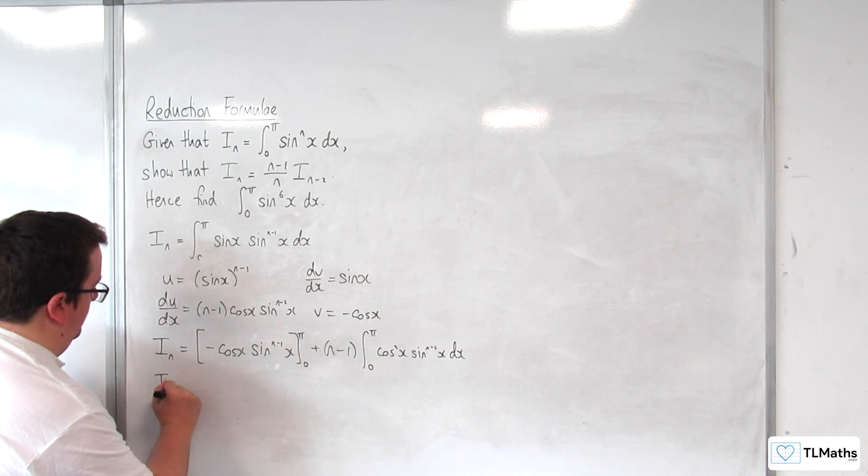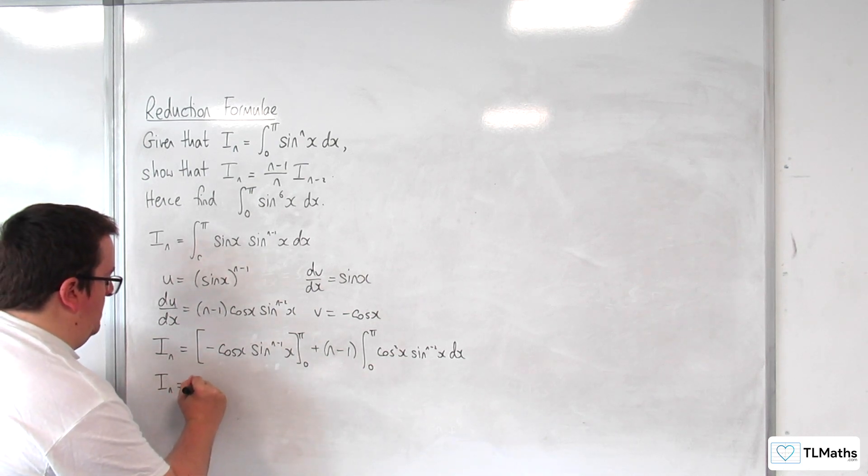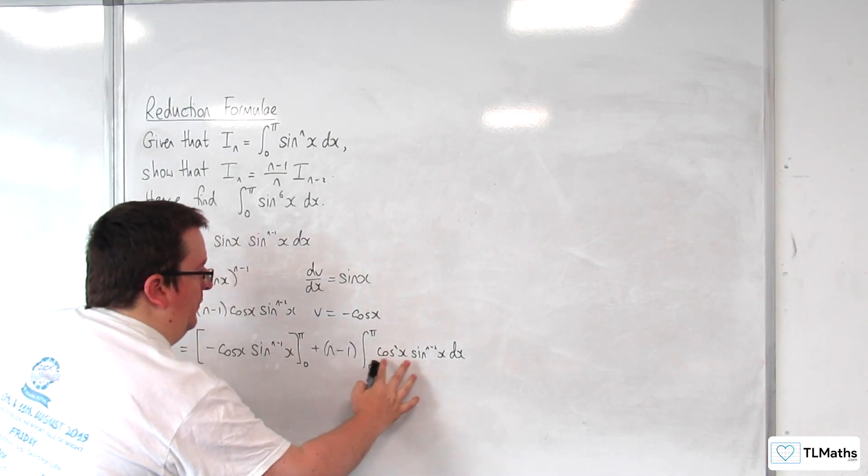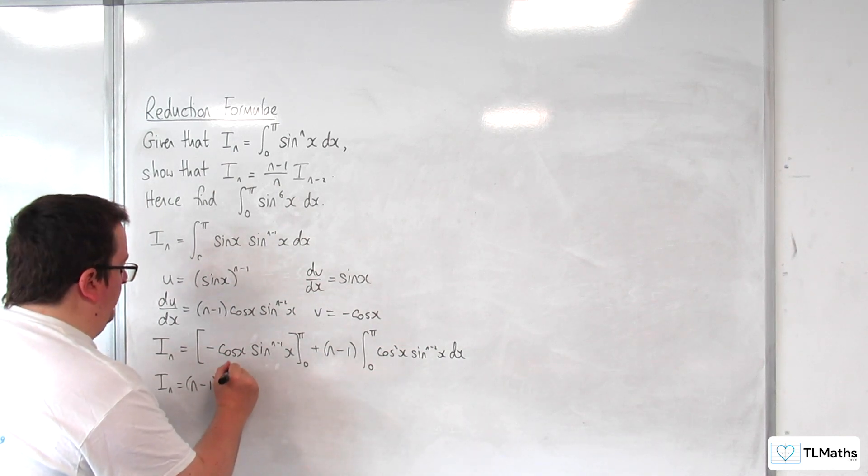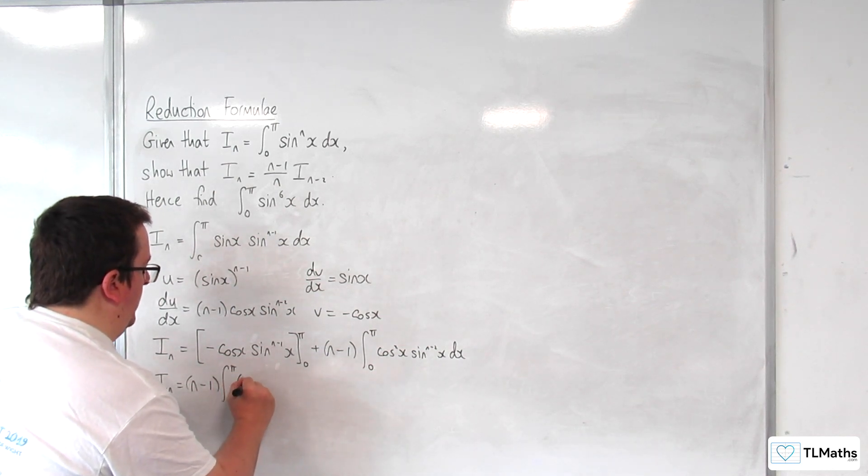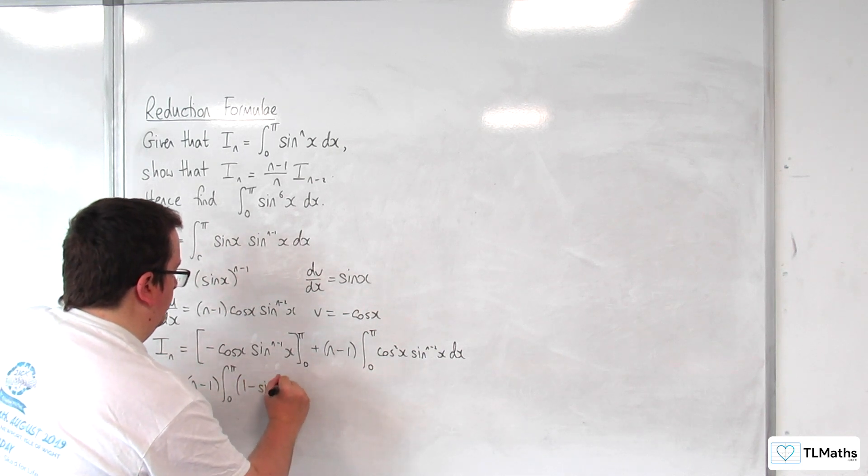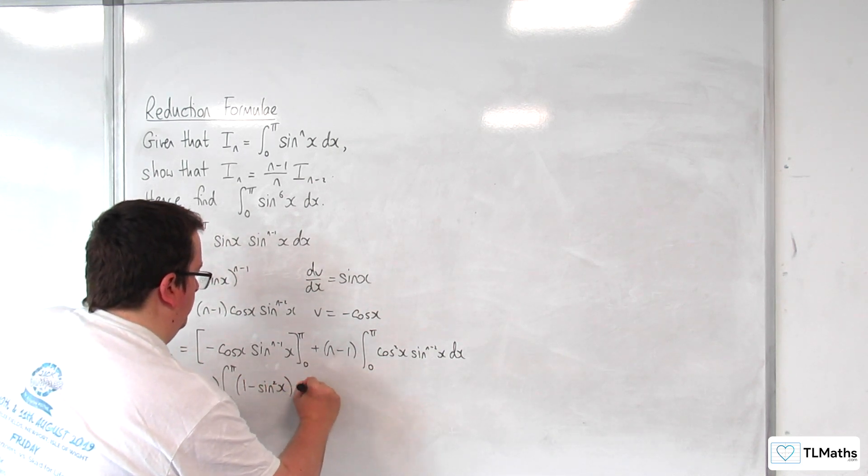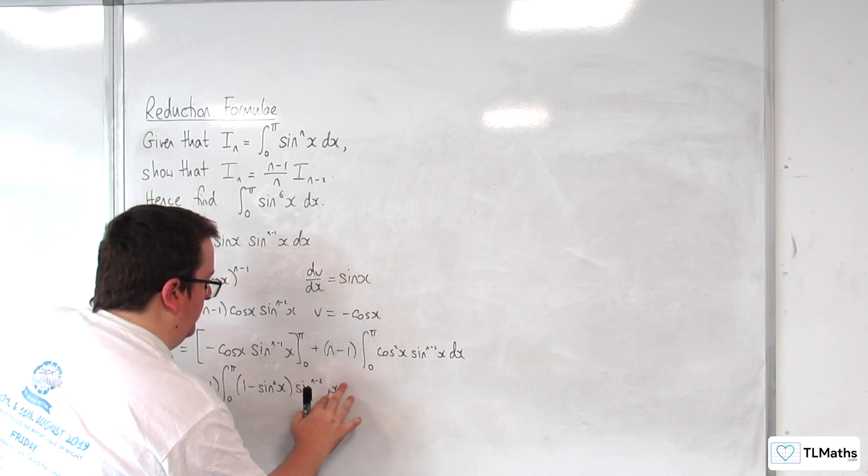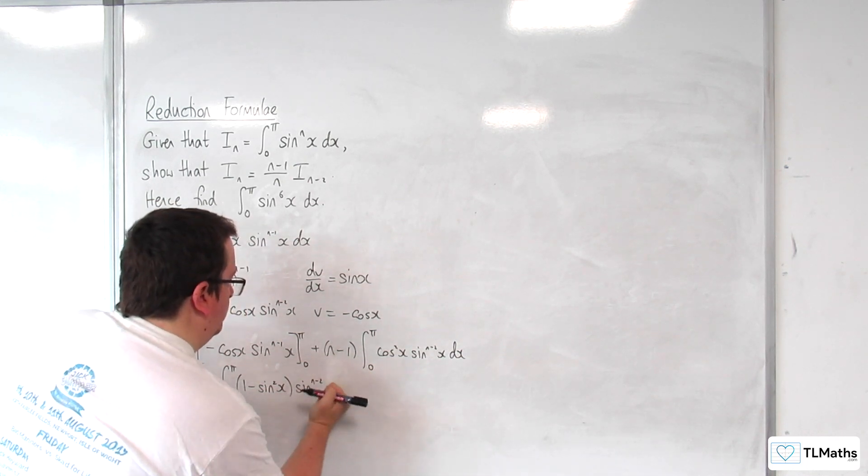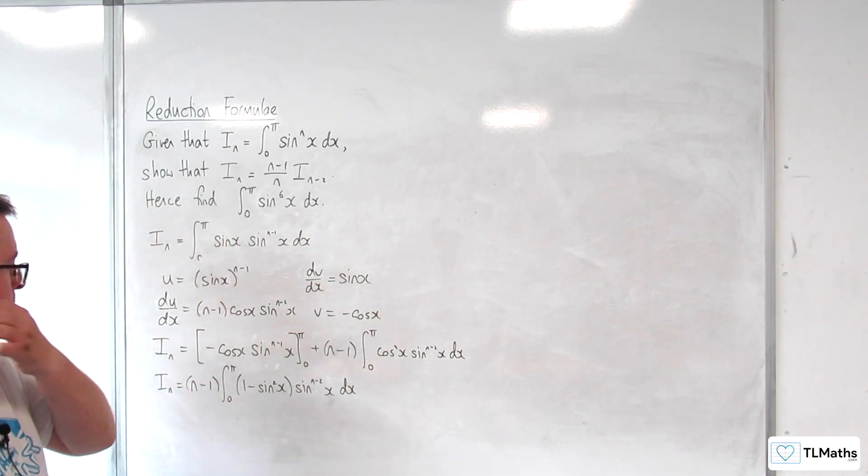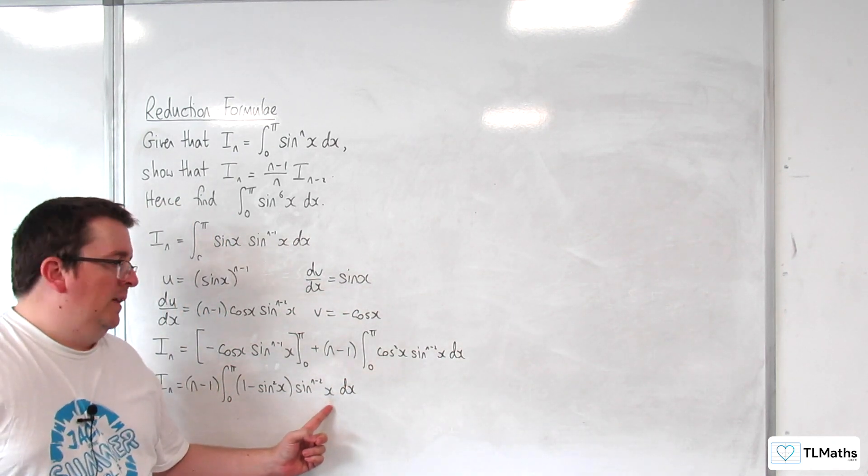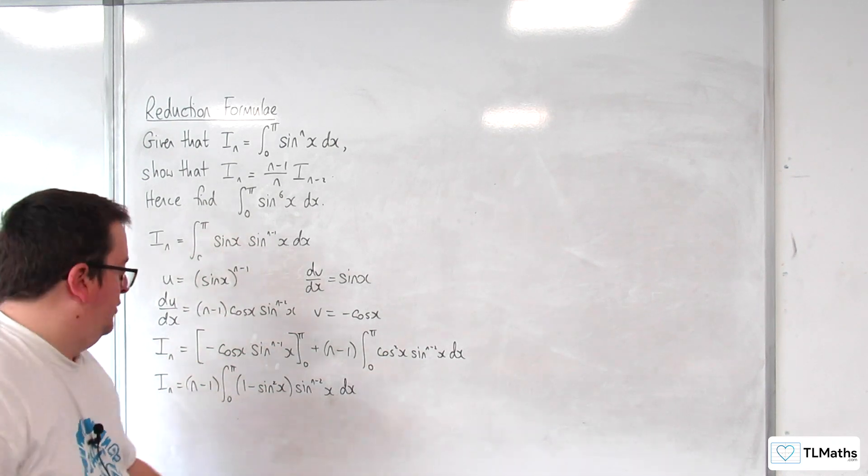So I_n equals (n-1) times this integral here. Now what I'm going to do is replace cos²(x) with 1 - sin²(x).